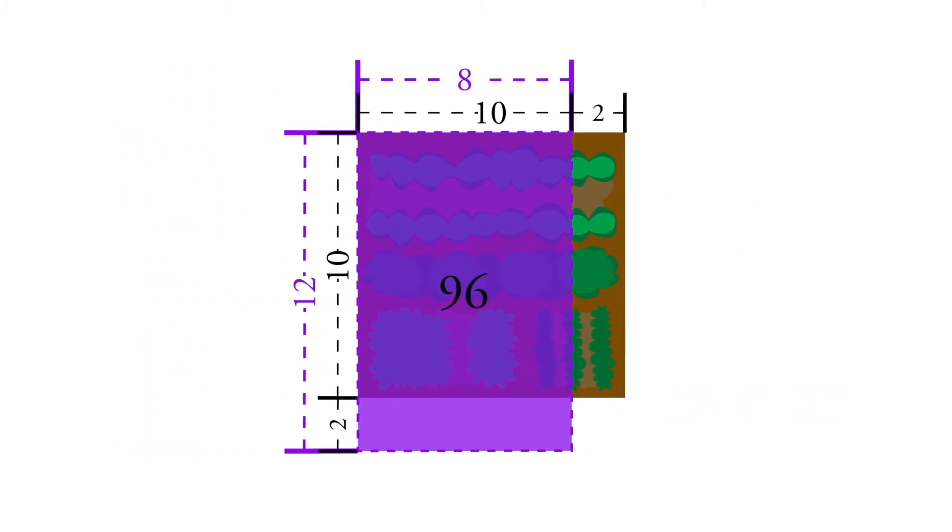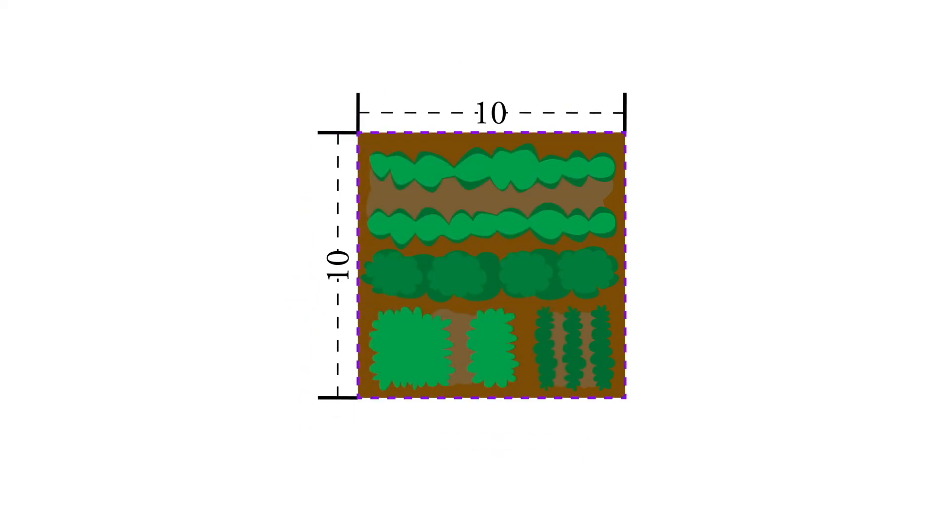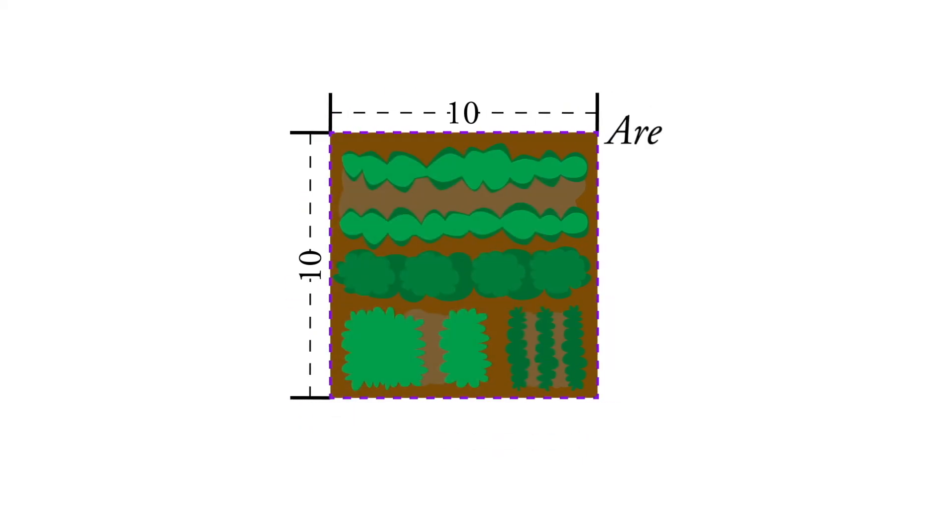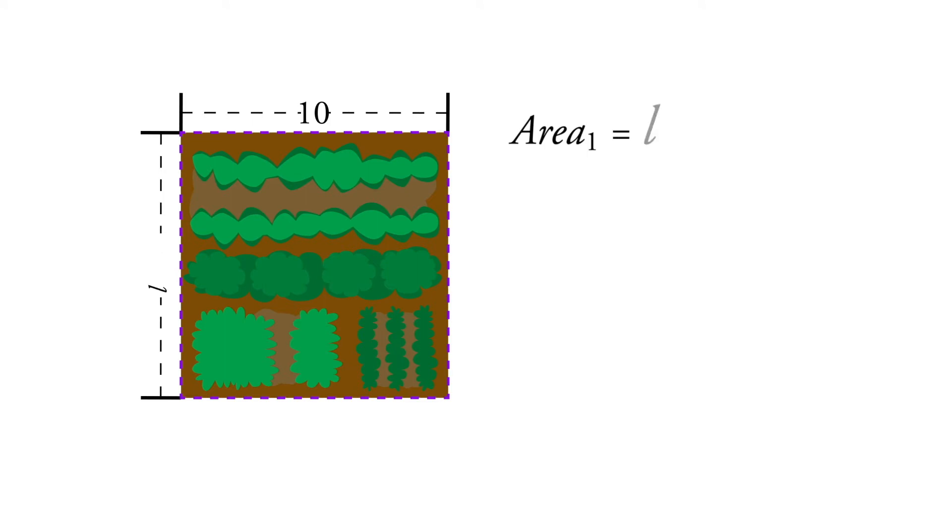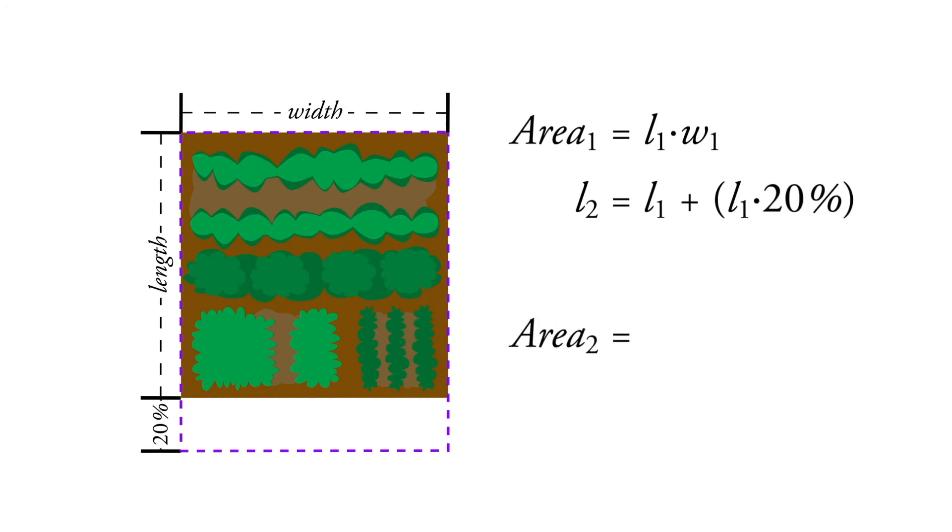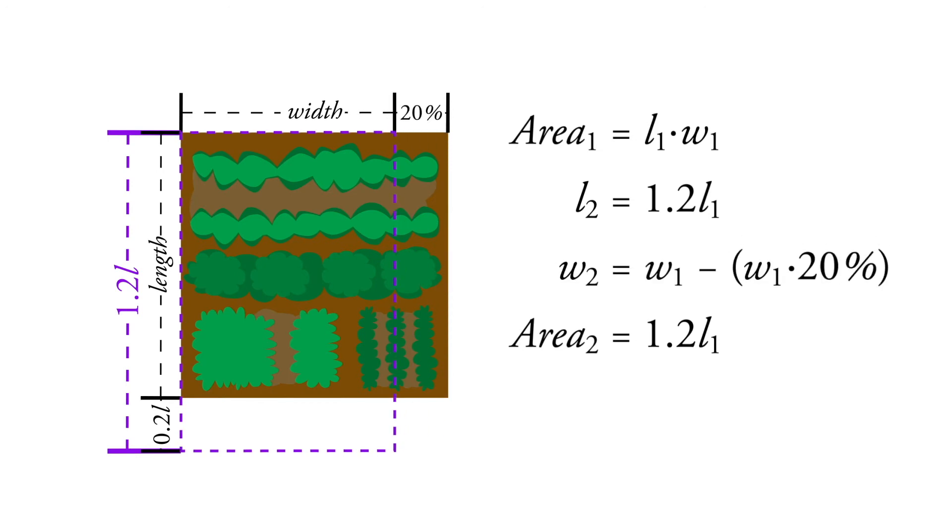If you want to do it in a more general way, we can do it like this. We can say that the area is equal to the length times the width. And now we're increasing the length. So our new area, our area 2, is length times 1.2 because it's 1.2 times the length. And our width is our width times 0.8. So we have 1.2L times 0.8W.